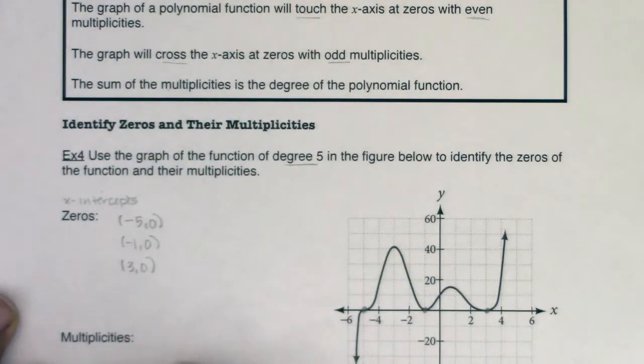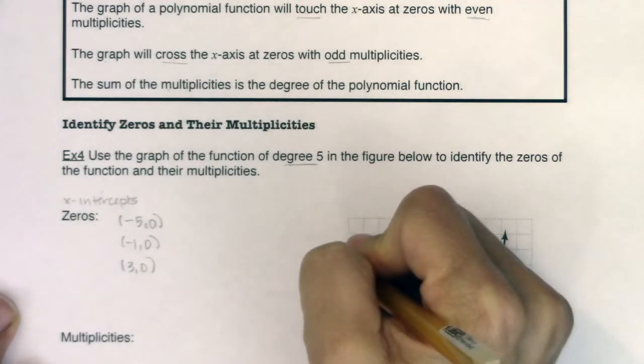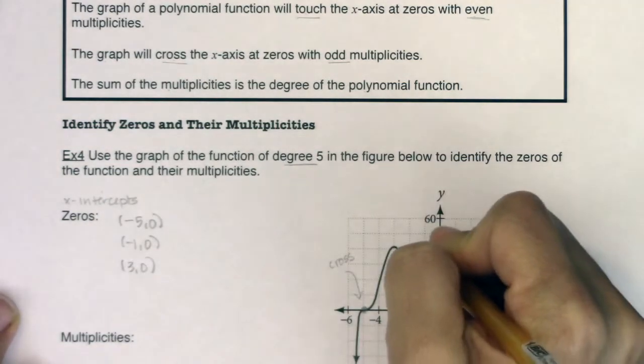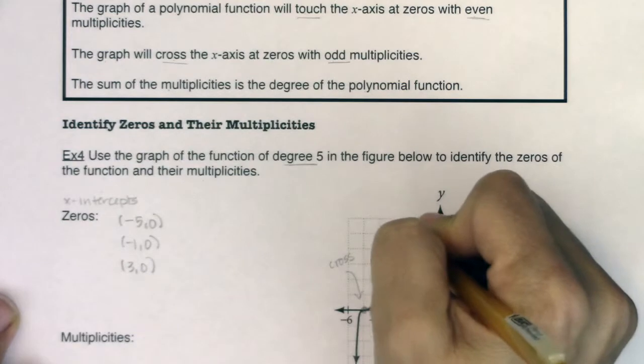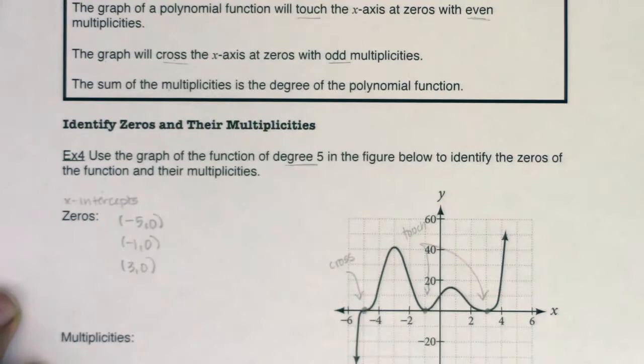Now before we start to talk about their multiplicities, I want to take a look at the differences in these three zeros. I want you to take note that at this x-intercept, I cross the x-axis. At this x-intercept, I touch the x-axis. And the same thing is true for this x-intercept. I touch the x-axis.